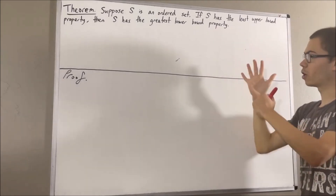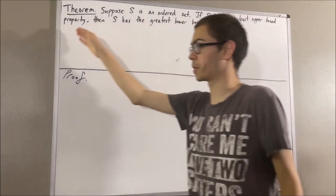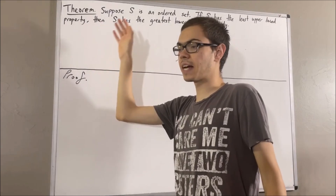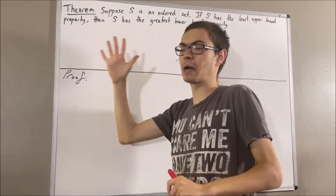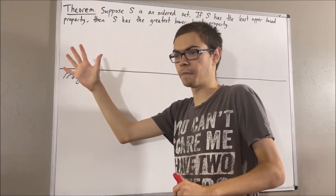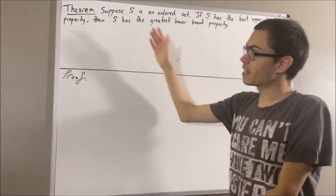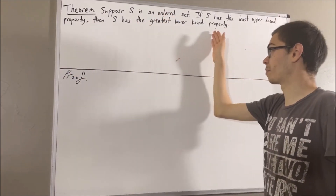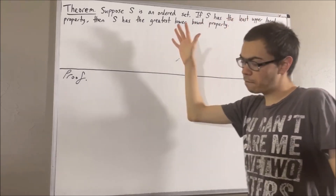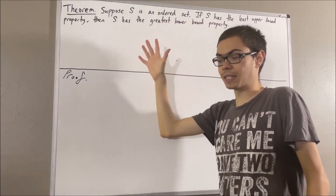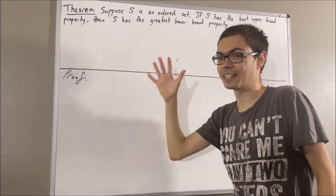Now, if you recall, to say that S has the least upper bound property means that every subset of S which is non-empty and bounded above has a supremum. To say that S has the greatest lower bound property means that every subset of S which is non-empty and bounded below has an infimum.